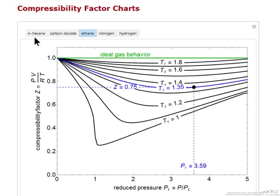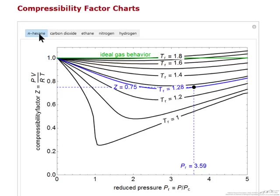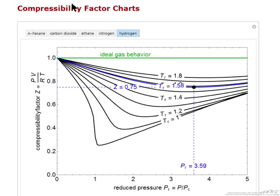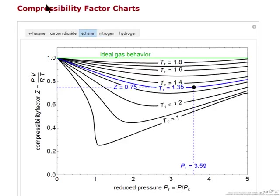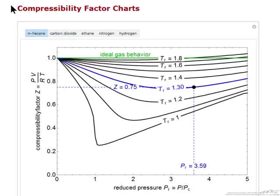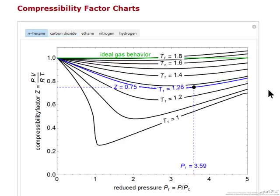We can also look at different molecules. For hexane compared to hydrogen, you notice for hydrogen over this range the compressibility factor is less than 1, and likewise for nitrogen. As we get to bigger molecules, then the compressibility factor at the higher pressures is greater than 1 at the high reduced temperatures.